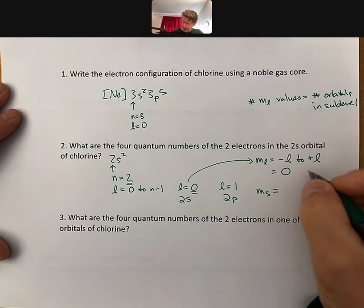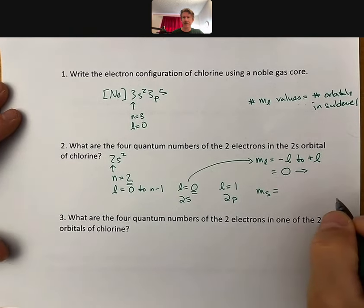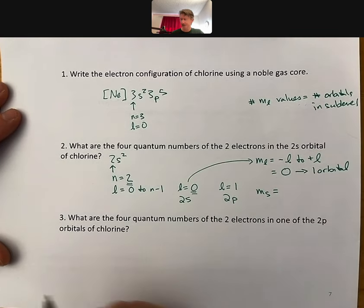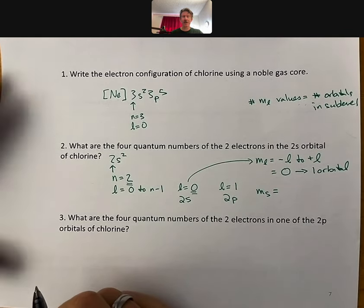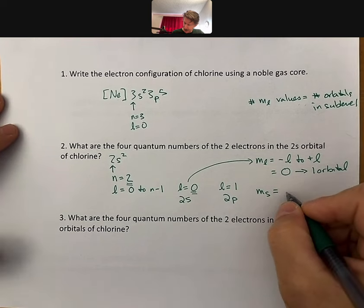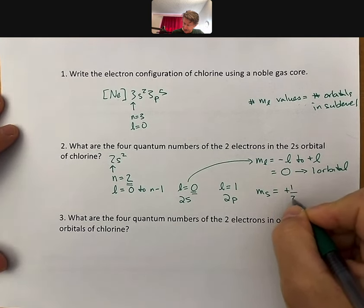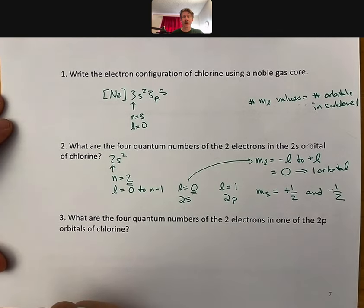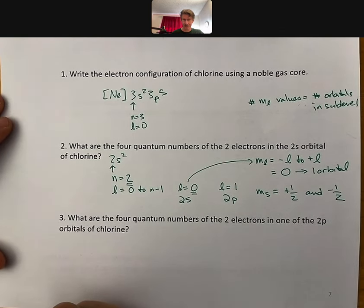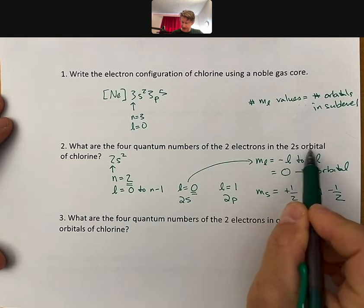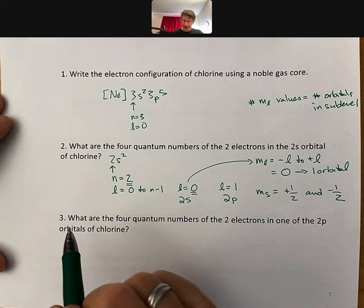So, the fact that there's one value means that there's one orbital. Each orbital can hold up to 2 electrons, and those 2 electrons of plus half and minus half for their principal quantum numbers.